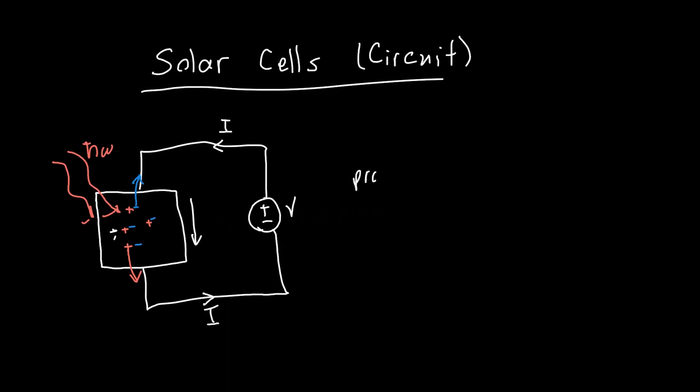But there's a problem with this. And the problem with this is that we aren't getting any power out of the solar cell. We're actually giving it power. So we're giving this cell power. We have to supply some energy to extract the electrons and the holes.